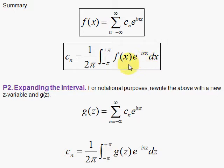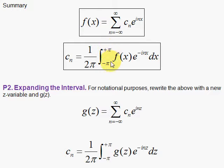We want to expand the interval in this section from 2π to 2l. So instead of going from minus π to plus π, we'll go from minus l to plus l. Our interval will be symmetric about the x equals zero axis.